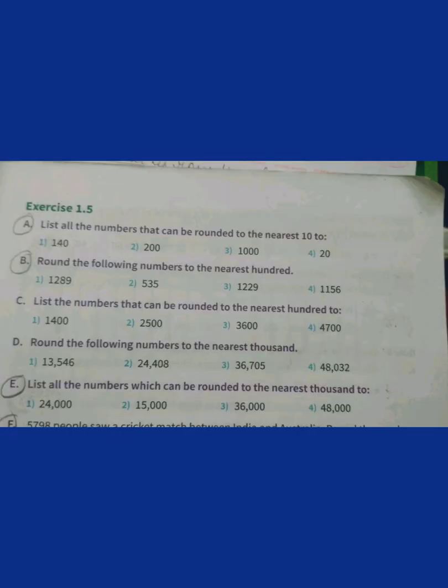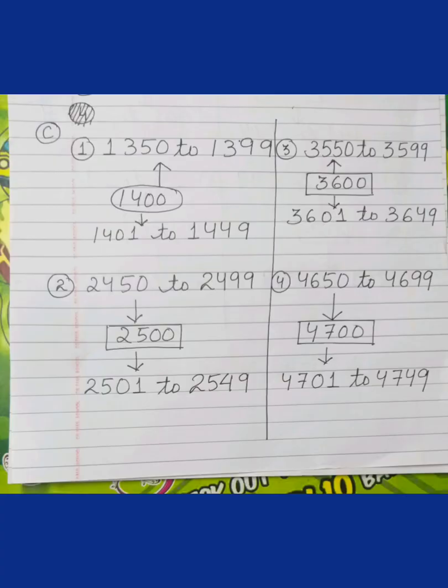Coming to the next question: list the numbers that can be rounded to the nearest 100. Again, the upper limit and lower limit apply. Question number A1 is 1400. The upper limit is 1401 to 1449 and the lower limit is 1350 to 1399 — these can be rounded up to 1400. The condition is nearest to the hundreds place. Similarly, we can do question numbers 2, 3, and 4.